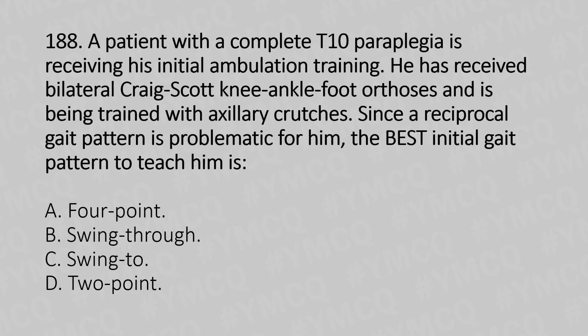Now let's move to question number 188. A patient with complete thoracic paraplegia is receiving his initial ambulation training. He has received bilateral knee-ankle-foot orthoses and is being trained with axillary crutches. Since his reciprocal gait pattern is problematic for him, the best initial gait pattern to teach him is: Option A: four-point, Option B: swing-through, Option C: swing-to, Option D: two-point.